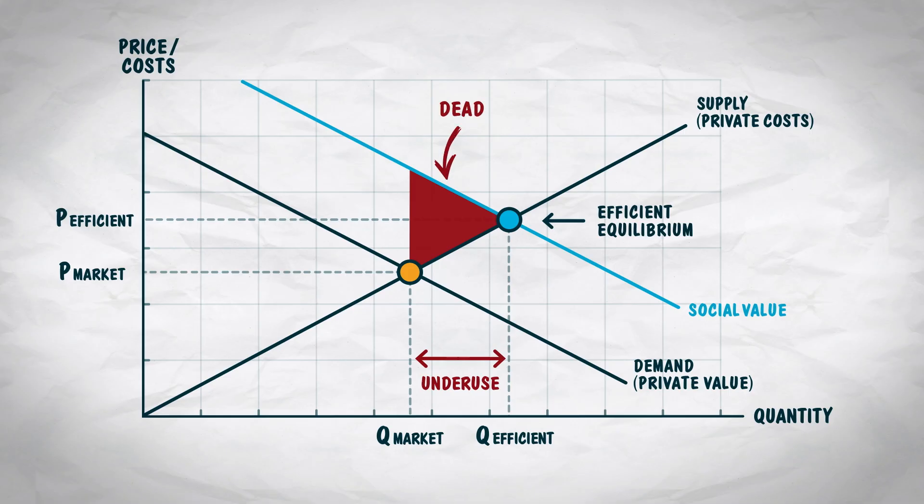We again see a deadweight loss. By that term, deadweight loss, we mean potential gains from trade that are not realized. So what can we do about deadweight loss from a positive externality? Flu shots are now increasingly available at discounted prices or sometimes even for free. Why is that? We'll explore that topic in our next video.